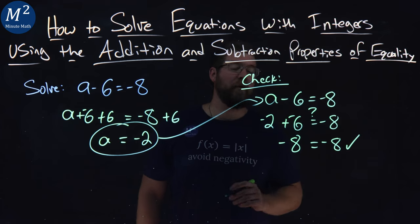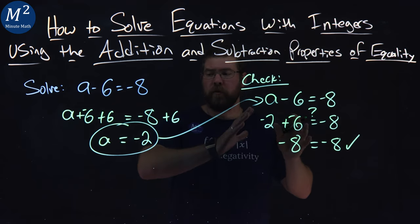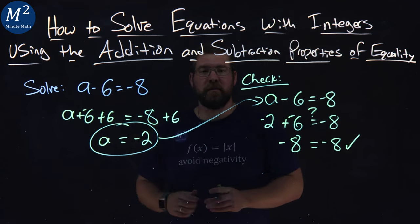Negative 2 plus negative 6 is negative 8. And as you see, our left and right-hand side are equal, confirming that a equals negative 2 is a solution to our equation.